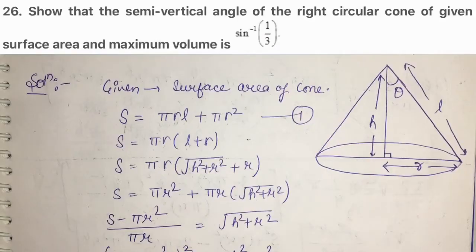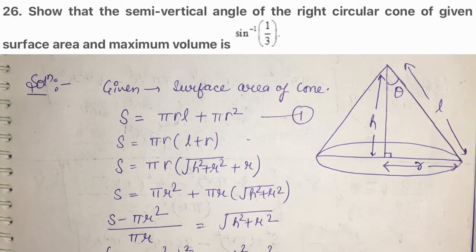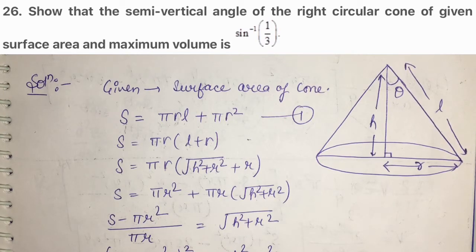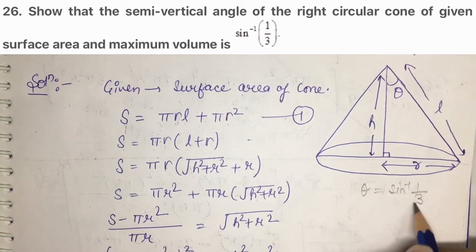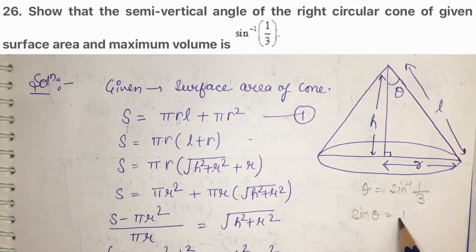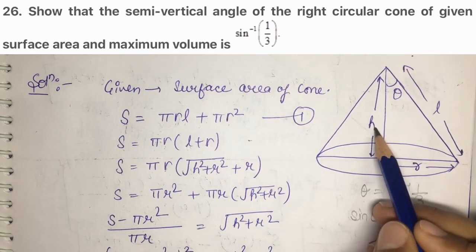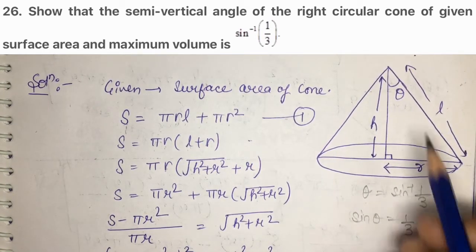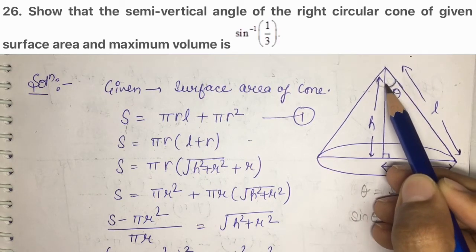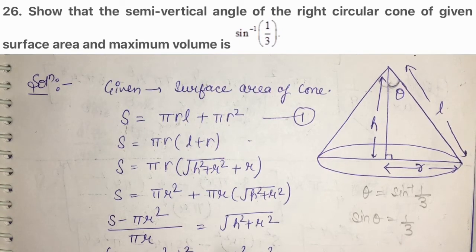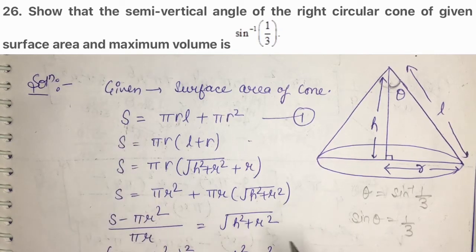Now question number 26, which is similar to question 25. It says: show that the semi-vertical angle of the right circular cone of given surface area and maximum volume is sin⁻¹(1/3). You have to show that the semi-vertical angle θ = sin⁻¹(1/3), i.e., sin θ = 1/3. Surface area given means S is constant.